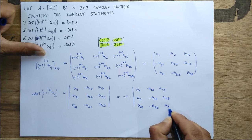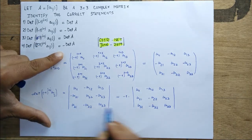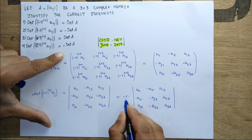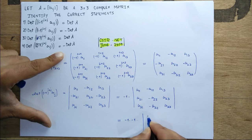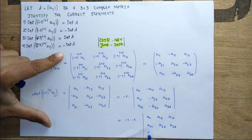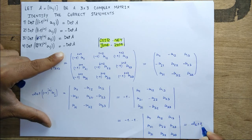If I take -1 common from row number two and -1 common from column number two, I get (-1) × (-1) times the determinant of the original matrix with entries a11, a12, a13, a21, a22, a23, a31, a32, a33. So minus times minus is plus, and this equals the determinant of A.